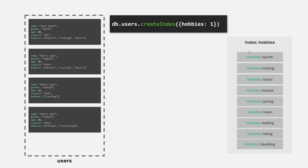This also means that multi-key indexes for a lot of documents are bigger than single field indexes. For example, for only four documents we have around nine pointers because some documents have one or two hobbies. So it is important to understand that multi-key indexes are possible but they are typically bigger — though that does not mean you should not use them.